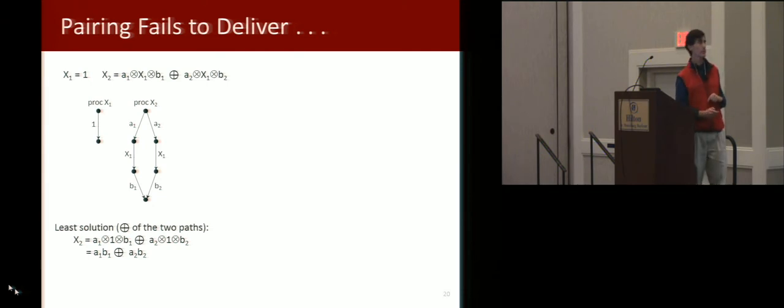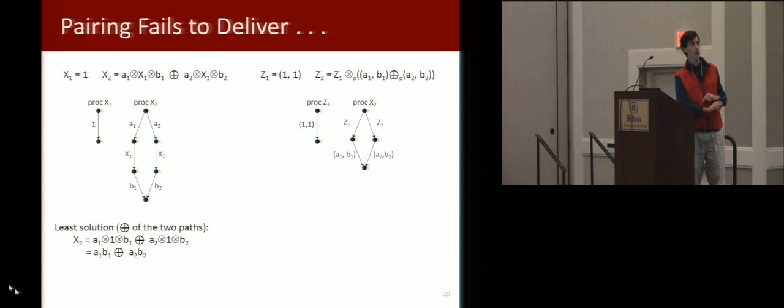But pairing fails to deliver. Even in this simple example, there are only two paths, and what we want is a one b one plus a two b two is the answer. And the problem is, if you do this pair, you get this,